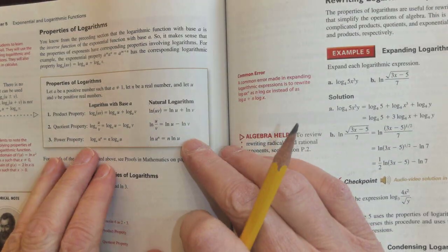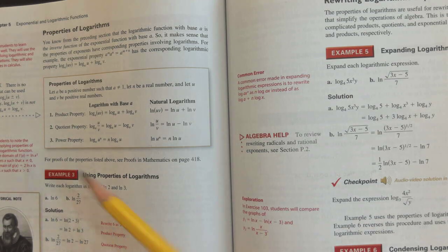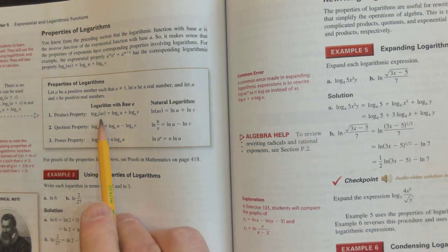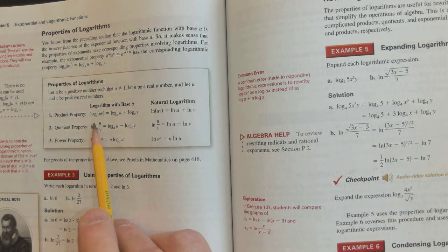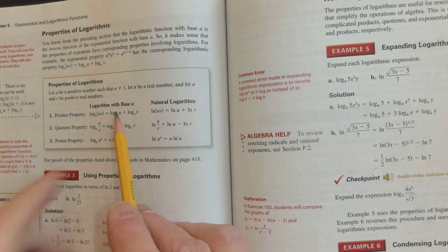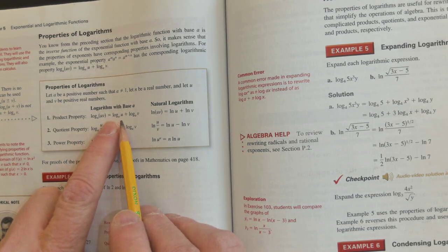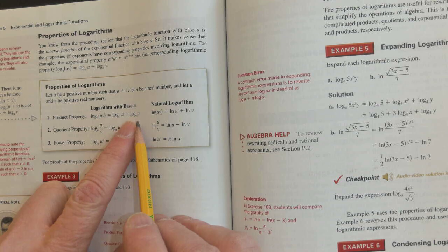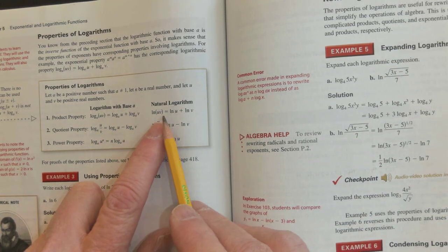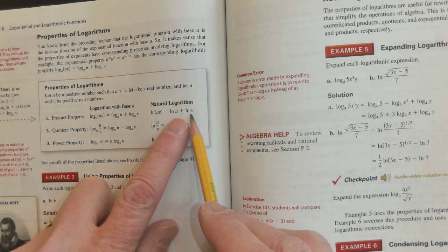The second group is the product property, the quotient property, and the power property. For the product property: log base a of u times v. If I take a squared times a cubed, I add exponents. So log base a of u times v equals log base a of u plus log base a of v. And the natural logs follow too: natural log of u times v equals natural log of u plus natural log of v.